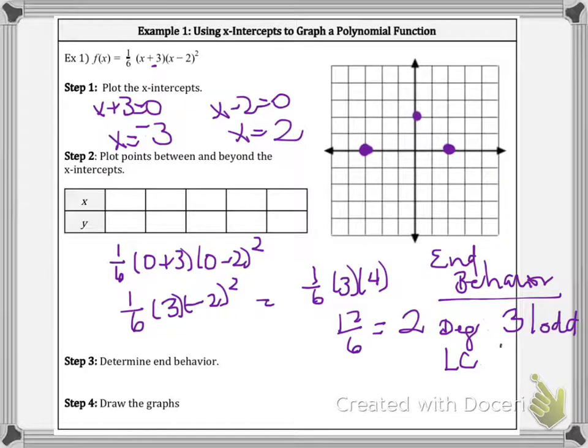The leading coefficient is one-sixth, or it's positive. So we know that if the degree is odd, leading coefficient is positive, then it's going to go up on the right and down on the left.